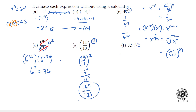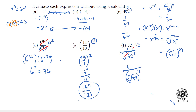Here we have 32^(−3/5). Because of the negative exponent, this becomes 1 over (the 5th root of 32) cubed. I recommend taking the 5th root first because 32's 5th root is a number we know: it's 2. So we get 1 over 2³, which is 1/8.